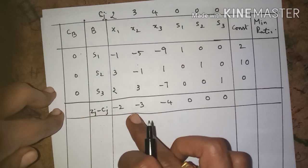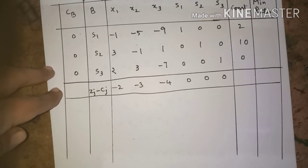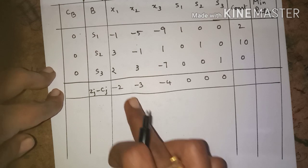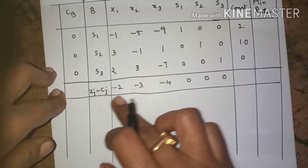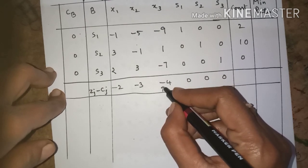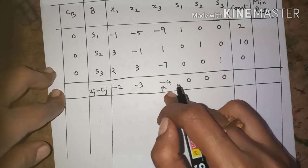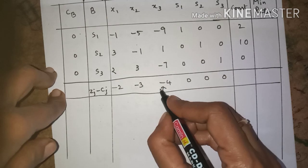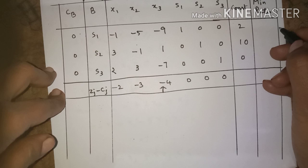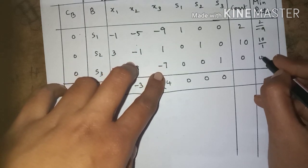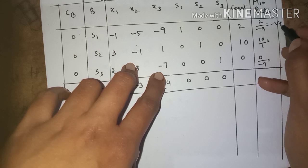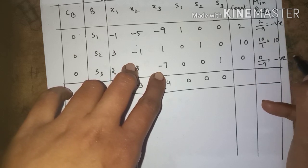Now we start the simplex procedure. We identify the most negative value in the index row — here it is -4, in the x3 column. So we choose x3 as the entering variable and put an arrow on the x3 column. For the minimum ratio, we calculate: constant divided by the chosen column values — 2 divided by -9, 10 divided by 1, and 0 divided by -7.